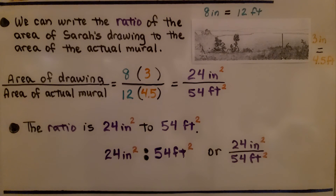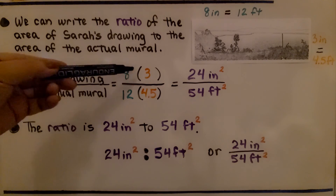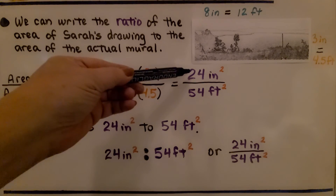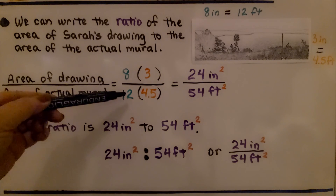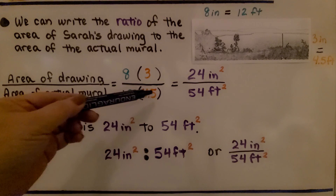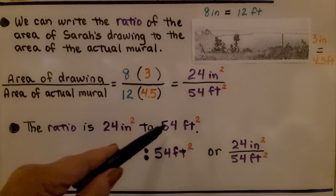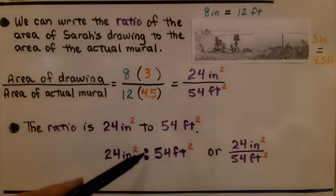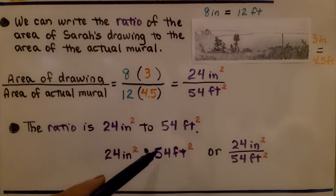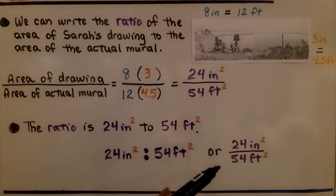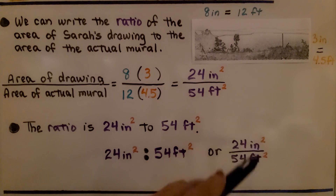We can also write the ratio of the area of Sarah's drawing to the area of the actual mural. The area of the drawing is 8 by 3, which gives us 24 square inches. The area of the actual mural is 12 by 4.5 feet, which gives us 54 square feet. So the ratio is 24 square inches to 54 square feet, written with a colon or as a fraction.